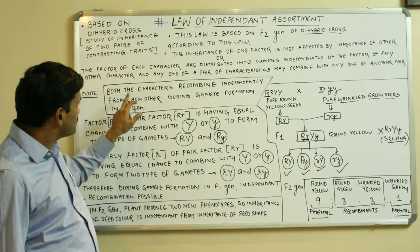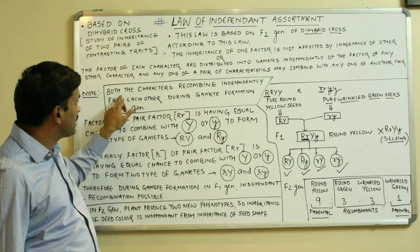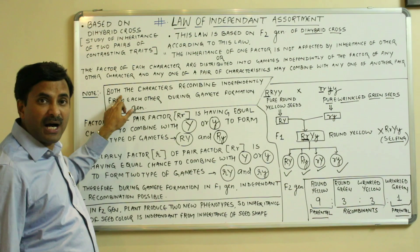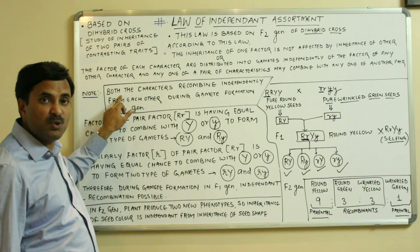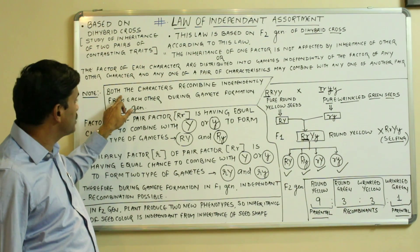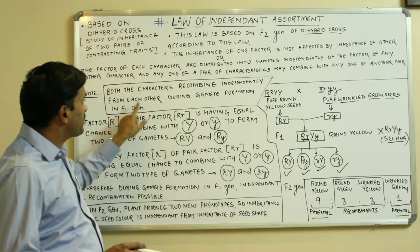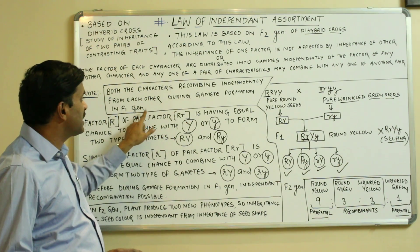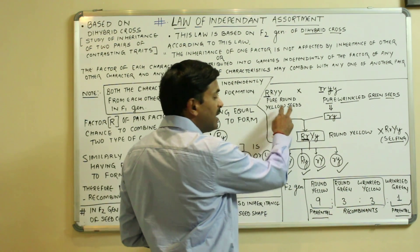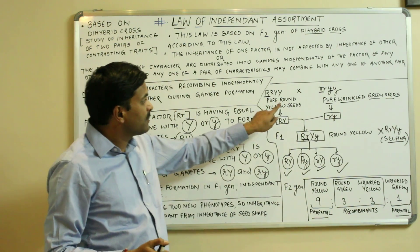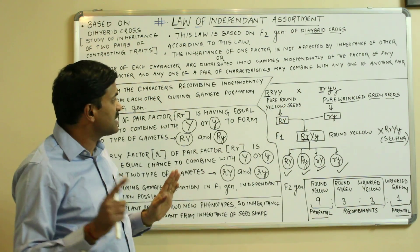Both the characters recombine independently. We use the term 'both' because we are studying the dihybrid cross, in which we take two pairs of contrasting characters. Both the characters recombine independently from each other during gamete formation in the F1 generation. I have taken two characters here: one is seed shape and another is seed color.